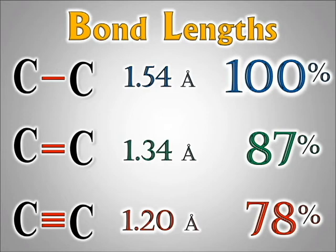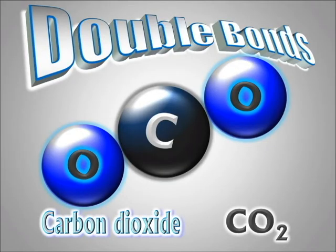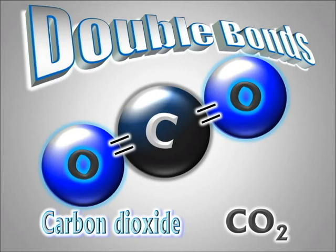Multiple bonds really do pull nuclei closer together, making shorter and stronger bonds that are harder to break. Another good example is carbon dioxide (CO2), which has two double bonds. One reason we have so much trouble removing CO2 from the atmosphere is because of those double bonds — breaking it apart in any way requires significant energy.